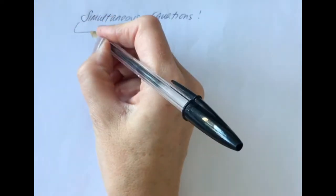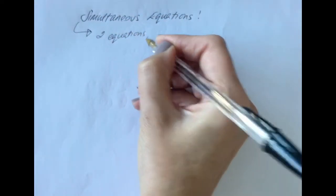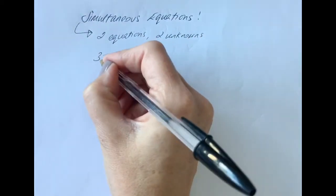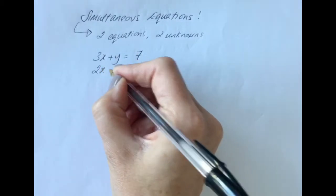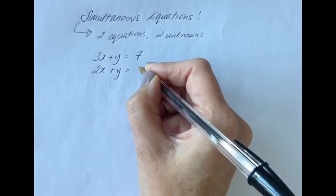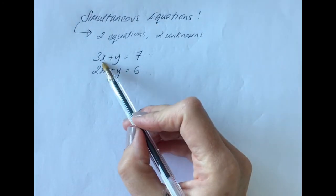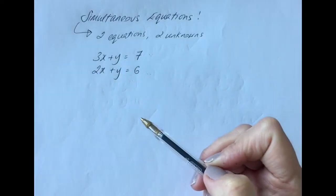In this video we're going to look at solving simultaneous equations. Simultaneous equations is when you have two equations and two unknowns — two things you don't know the value of. For example: 3x + y = 7 and 2x + y = 6. We have two equations and we don't know the value of x or y, so we have two equations, two unknowns.